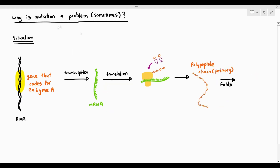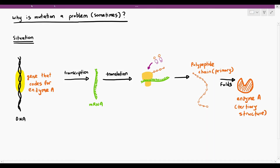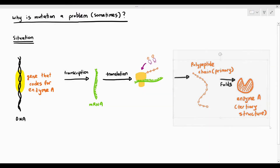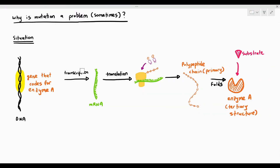This polypeptide chain will fold to become a tertiary structure to form a three-dimensional shape called enzyme A. Enzyme A has a nice active site where it's folded inwards so that it can bind to the substrate. When the substrate binds to the enzyme and forms the ES complex, the activation energy is reduced, and the substrates can become products. So a normal gene codes for a normal enzyme, and the normal enzyme is able to function.